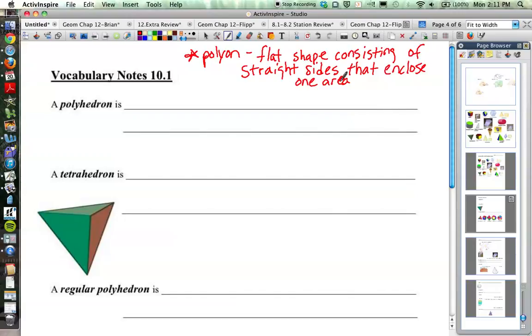That gets us into the word polyhedron. So the word polyhedron is a solid formed by polygons.